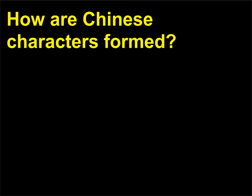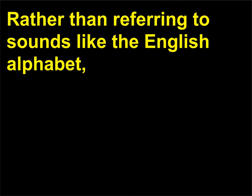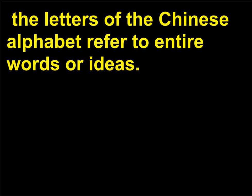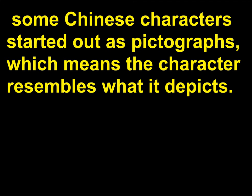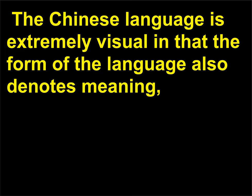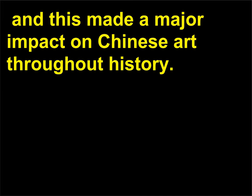How are Chinese characters formed? Rather than referring to sounds like the English alphabet, the letters of the Chinese alphabet refer to entire words or ideas. These are called characters, or calligraphs. Some Chinese characters started out as pictographs, which means the character resembles what it depicts. The Chinese language is extremely visual in that the form of the language also denotes meaning, and this made a major impact on Chinese art throughout history.